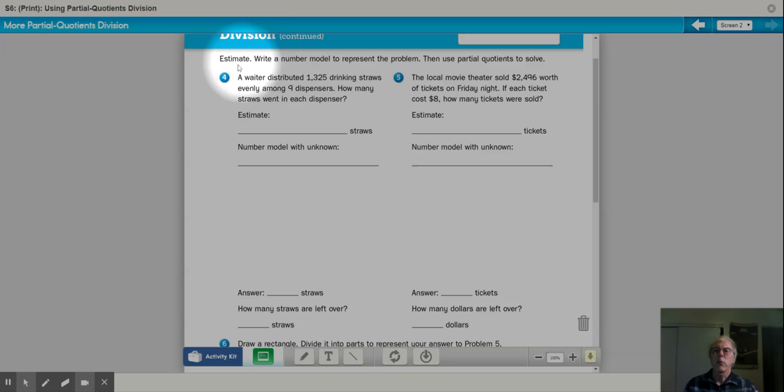Alrighty, so first thing, instructions. Estimate. We're going to write a number model to represent the problem and then we're going to use partial quotients to solve it and write the answer. So here's the problem. A waiter distributed 1,325 drinking straws evenly among nine dispensers. He's got nine of those dispensers and he's going to evenly divide up the straws. How many straws go into each dispenser?